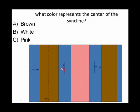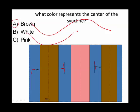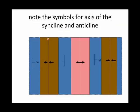Here we have rock layers dipping toward the brown layer and away from the pink layer. If you imagine from the side, it must be dipping down, then up, then back down again. The center of the syncline in this case would be brown, and it would be younger. We also have the symbols for the axis of the syncline — here's the axis where it changes direction. Arrows pointing in toward the axis indicate a syncline, while arrows going away from the axis indicate an anticline.